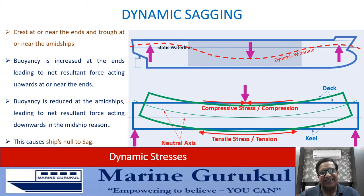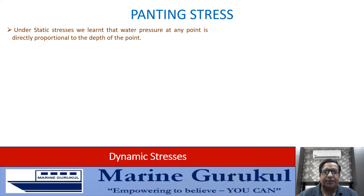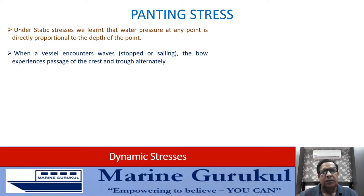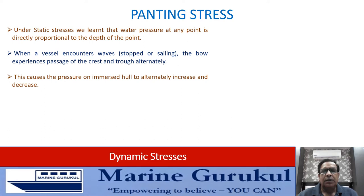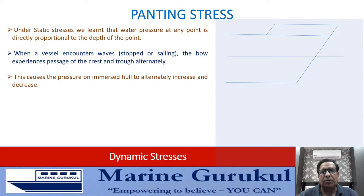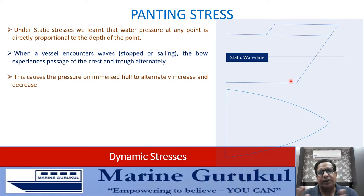Panting stresses: under static stresses we learned that water pressure at any point on the hull depends on the depth of that point below the water surface. When the vessel encounters waves, the bow experiences the passage of the crest and the trough alternately. This alternating passage causes the pressure on the immersed hull to alternately increase and decrease. Here is the profile view of the ship's bow with the static waterline shown.